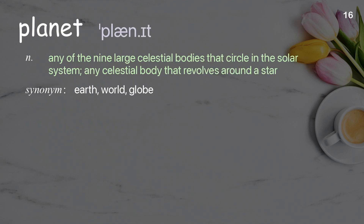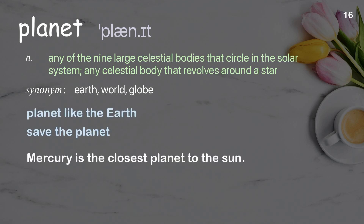Planet: any of the large celestial bodies that circle in the solar system; any celestial body that revolves around a star. Examples: planet like the Earth; save the planet. Mercury is the closest planet to the sun.